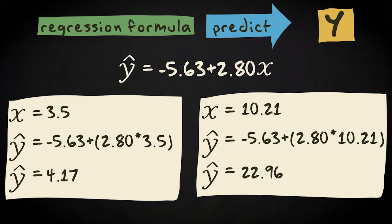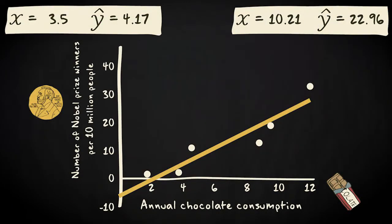We get the same values when we just look at our regression line. For an x value of 3.5, we get a predicted y value of about 4. And for an x value of 10.21, we get a y hat value of about 23. You can already see that there is a huge advantage of working with the formula. You can make much more precise predictions.